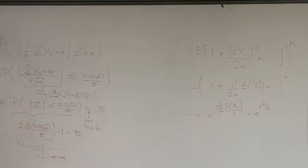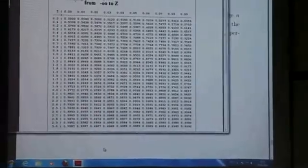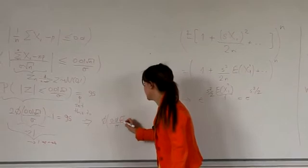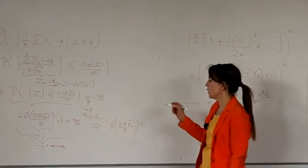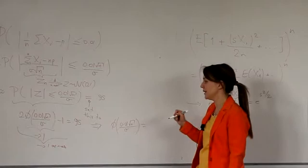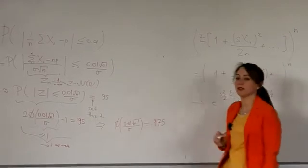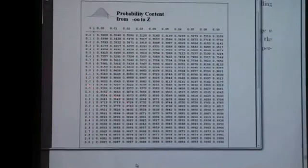Let's go to our Gaussian table. Let's first of all see what we really need the argument of phi to be. We need phi of 0.01 square root of n divided by sigma to be 0.95 plus 1 over 2, which is 1.95 divided by 2, 0.975. We want this. So, for which argument is the phi function equal to 0.975?